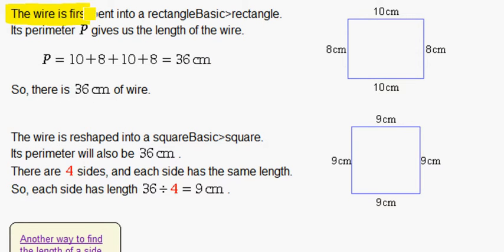The wire is first bent into a rectangle, basic rectangle. The perimeter, P, gives us the length of the wire.